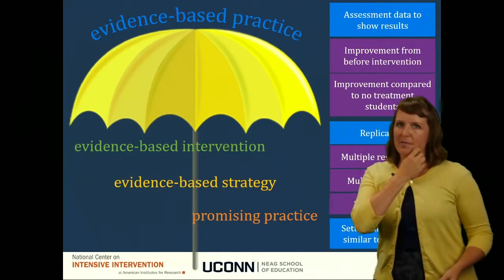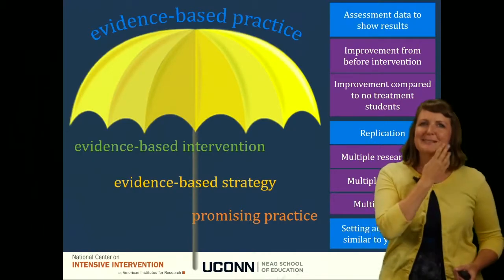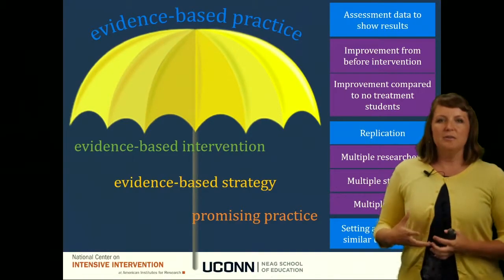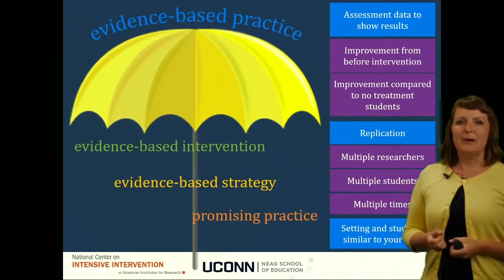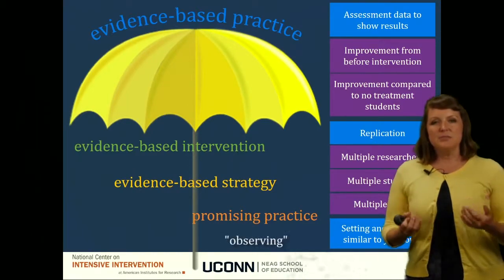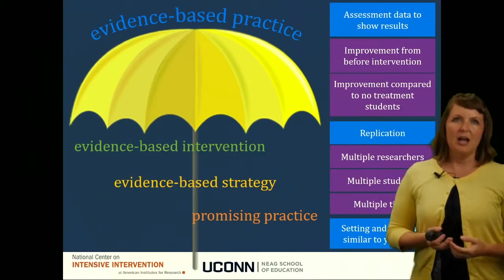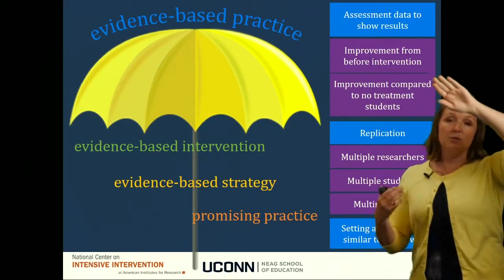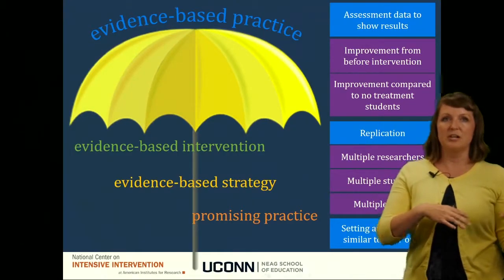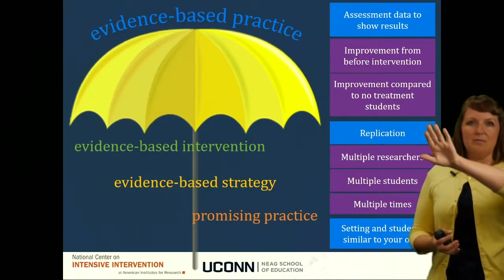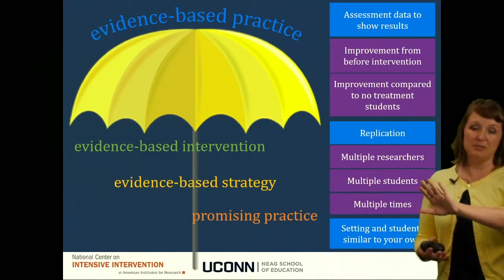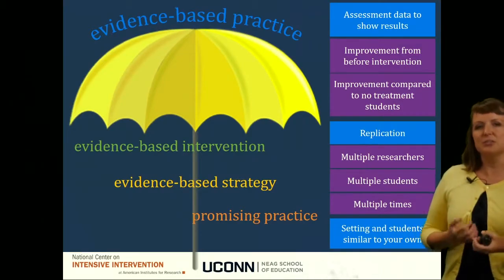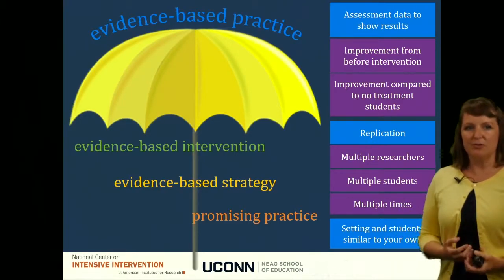So we are talking in this part about evidence-based practices and where to find them. Once you find those evidence-based interventions or strategies, you need to think about the quality of the evidence. I introduced this in the previous part, but I want to go over it quickly again. When I have an evidence-based intervention or strategy, I always want to think: is there assessment data that shows results? Does it show improvement from before the intervention, or does the data show improvement for students who received the intervention compared to students who did not? Has the work been replicated — did multiple researchers conduct it, with multiple students, conducted multiple times? And is the setting and the students in the original research similar to your own?